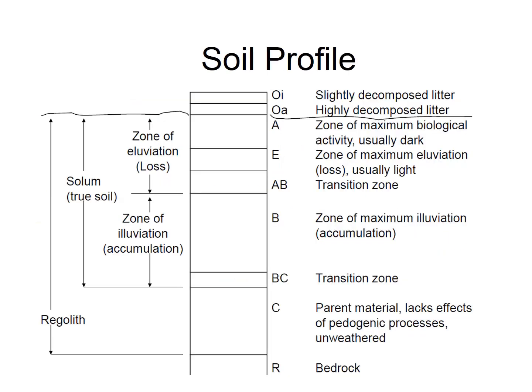This is a schematic of a soil profile. We can see different zones: the upper zone area, the zone of maximum alluviation, and then the bedrock, which is the parent material where the soil originally comes from. Note that the upper layer contains slightly decomposed litter, and the layer underneath it is highly decomposed litter. Organic matter is mostly concentrated in the upper layer. As we go deeper, there is less organic matter and less air available, which affects the number and distribution of microorganisms in the soil environment.